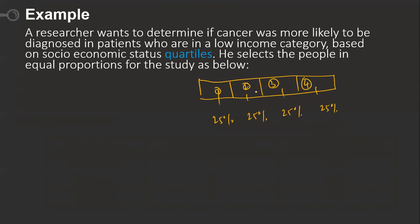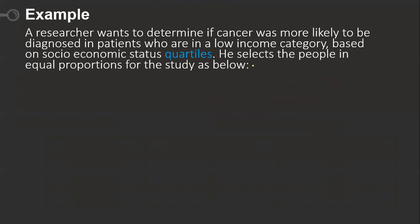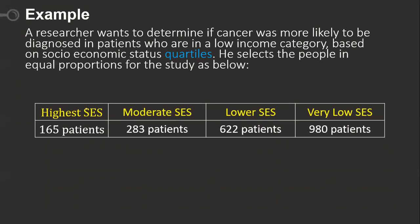The SES is split into quartiles — four equal parts. The researcher selects patients as follows: highest SES: 165 patients; moderate SES: 283 patients; lower SES: 622 patients; very low SES: 980 patients. Each SES category was expected to represent 25% of the sample.